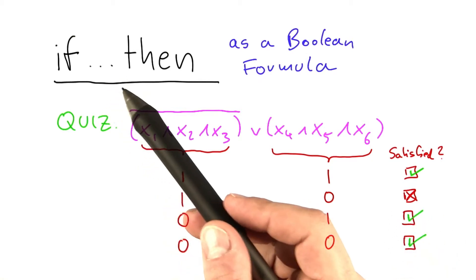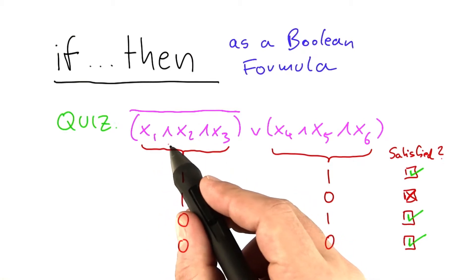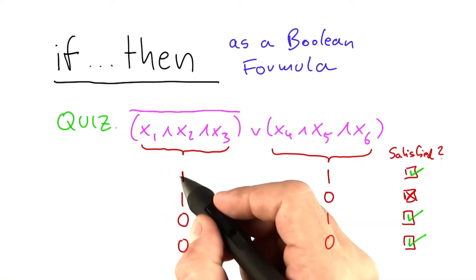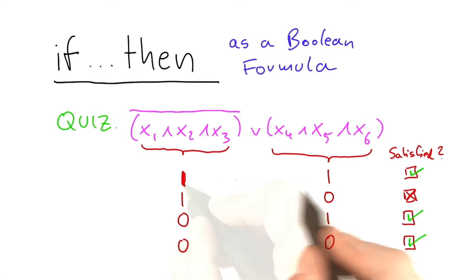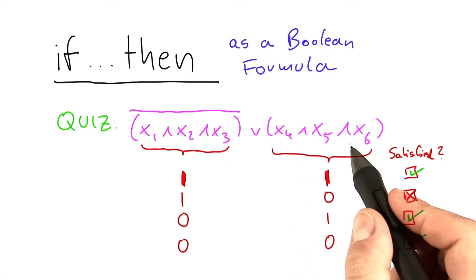What does this have to do with an if-then? Well, it's actually quite simple. If this part here, x1 and x2 and x3 evaluates to 1, then this part over here must also be 1 in order to satisfy the Boolean formula. It does not work if this part over here is 0.